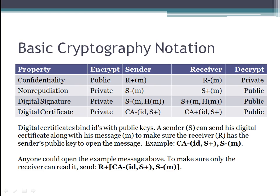You always keep your private key private, and the public key is public, so anyone can know it. For basic cryptography notation, if we want to achieve confidentiality — in other words, we want to make sure that the message cannot be read by anyone but the receiver — then you encrypt it with the receiver's public key. So the sender will encrypt a message M with the receiver's public key, and then the receiver will open it with his private key. The encryption is public, and the decryption is private. In both cases, the keys are the receiver's keys.